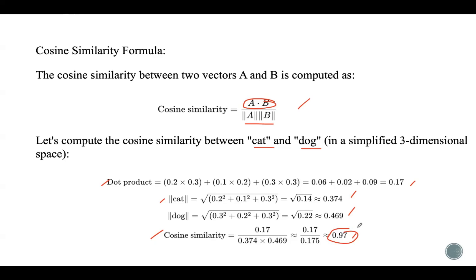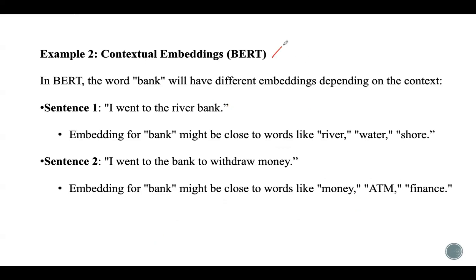Let us look at one more word embedding technique: contextual embeddings using BERT. In BERT, the word 'bank' will have different meanings and different embeddings depending on the context. In the sentence 'I went to the river bank,' the embedding for 'bank' will be close to words like 'river,' 'water,' and 'shore.' In the sentence 'I went to the bank to withdraw money,' the embedding will be close to words like 'money,' 'ATM,' and 'finance.' BERT uses surrounding words to generate more context-sensitive embeddings.